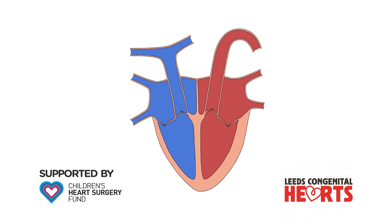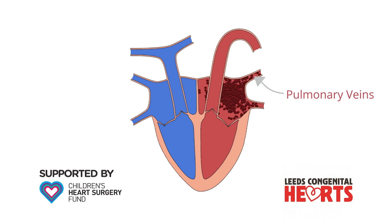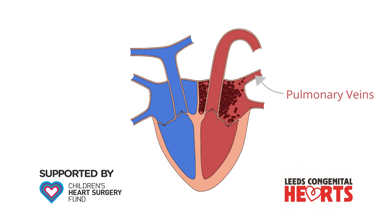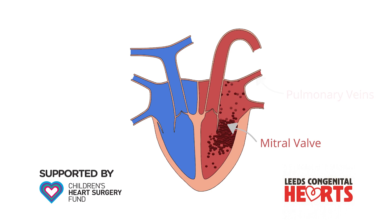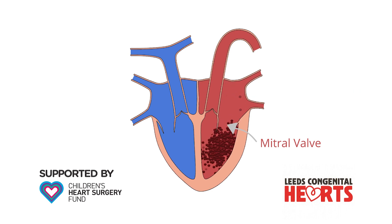In the lungs, blood picks up oxygen and becomes a brighter red colour. It travels from the lungs back to the left side of the heart, in the pulmonary veins, and enters the left atrium. From the left atrium, it passes through another one-way valve, the mitral valve, into the left ventricle.